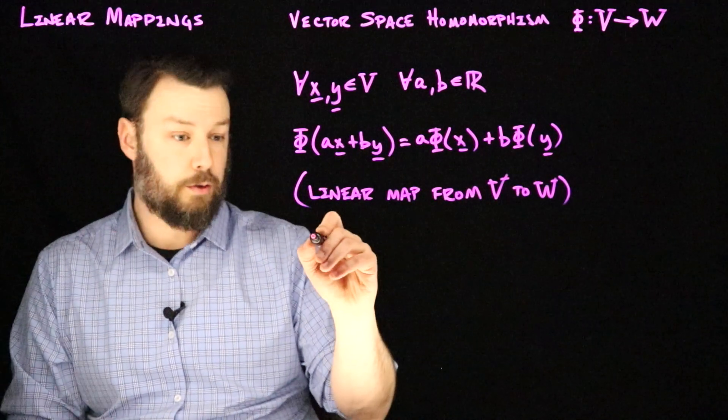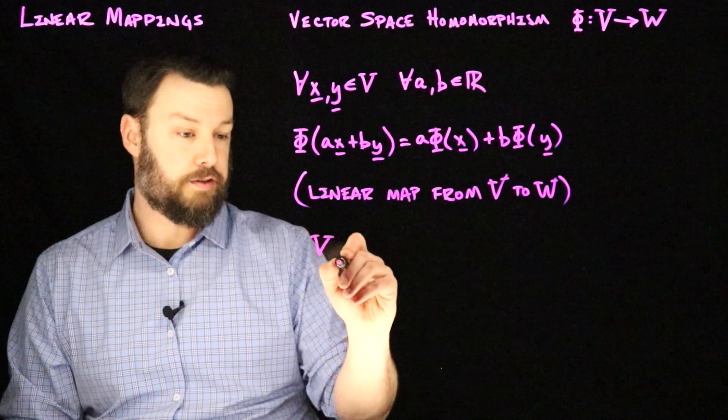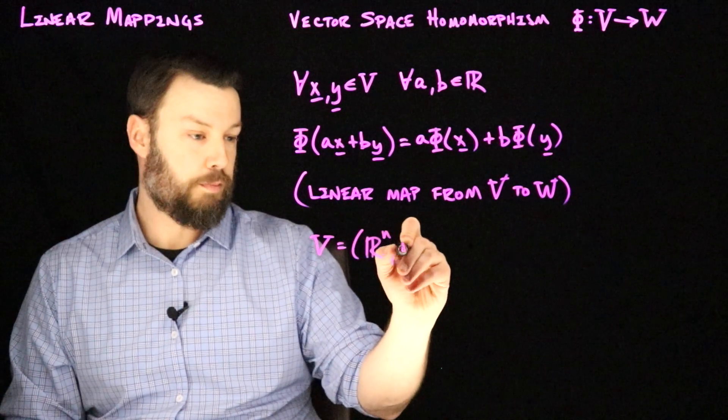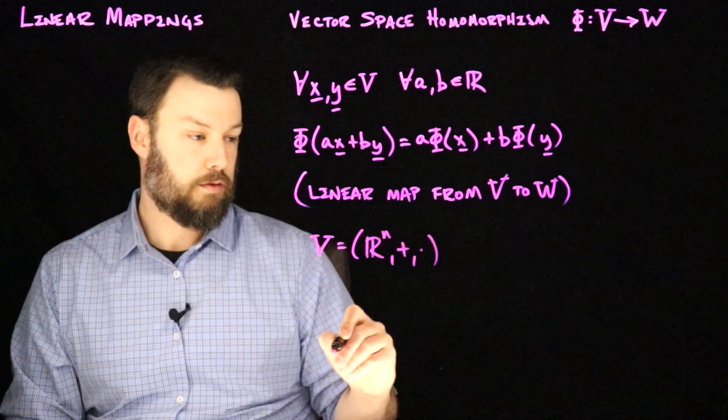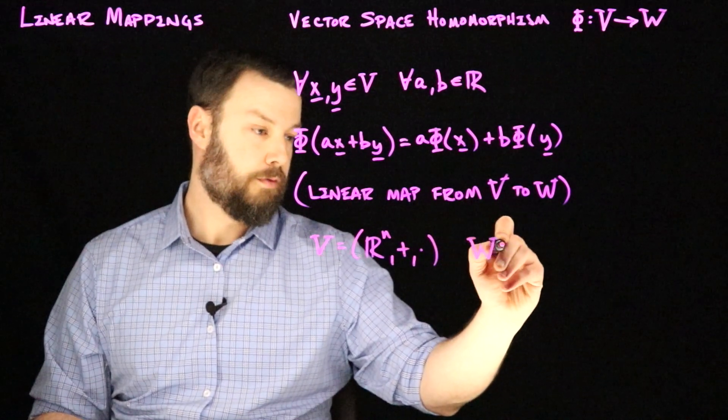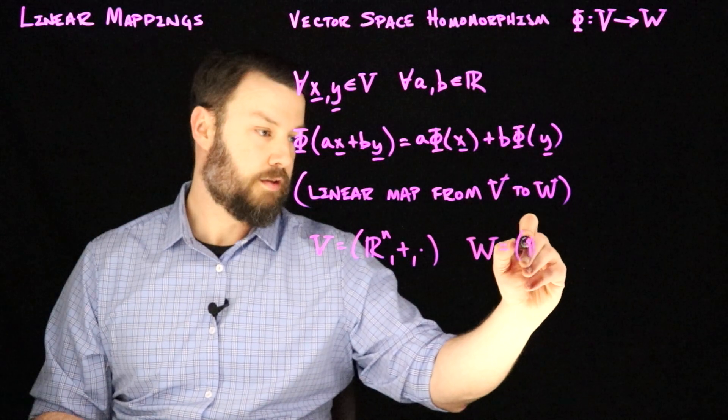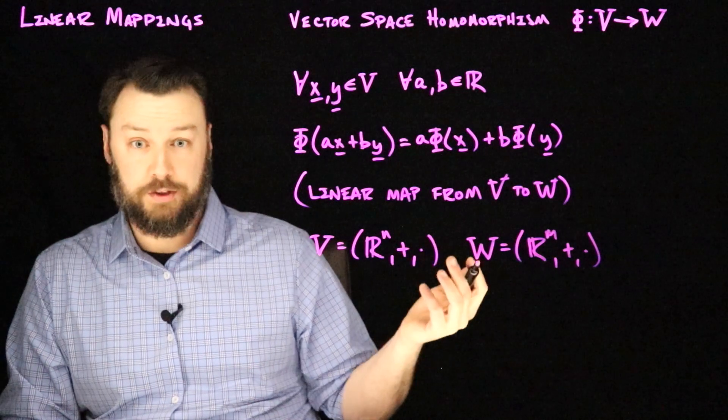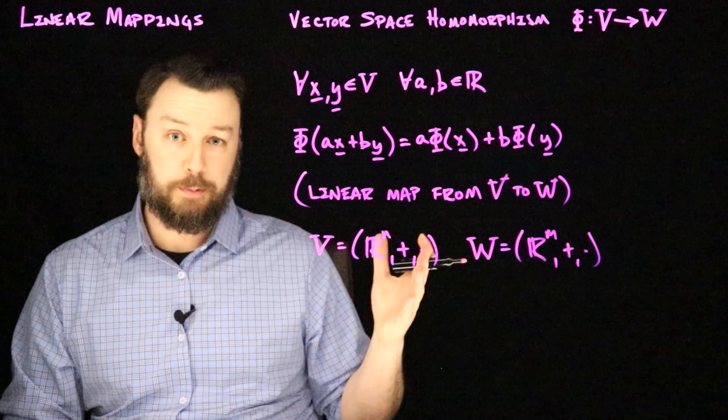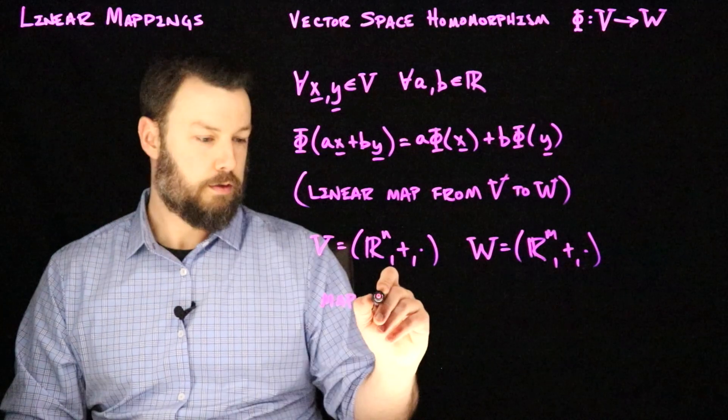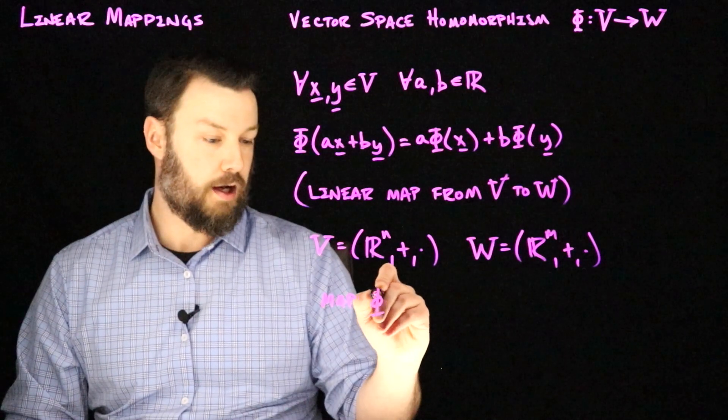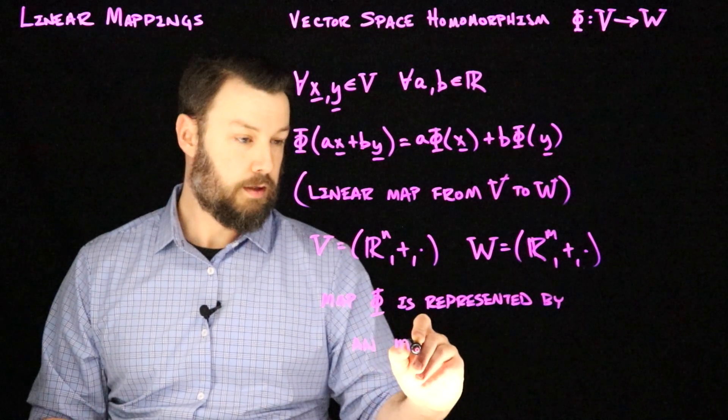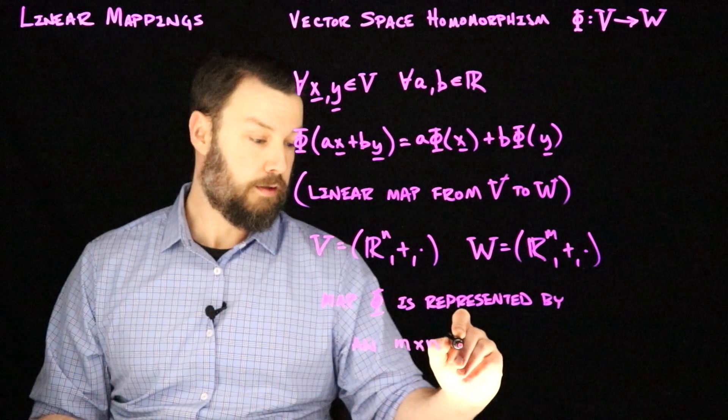And so just to be clear, if V is say Rn along with plus and dot and W is let's say Rm with our plus and our dot, then this linear map is represented by a matrix. In particular, it's represented by an M by N matrix.